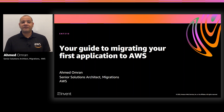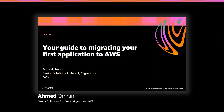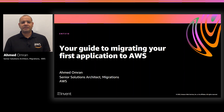What if I told you, you can do it yourself? My name is Ahmad Omaram. I'm a specialist solutions architect focusing on migration and modernization at AWS. I spend my time helping enterprise customers to successfully migrate significant workloads to AWS.